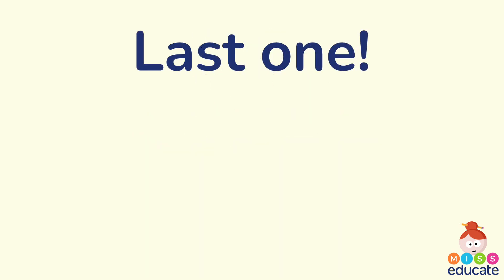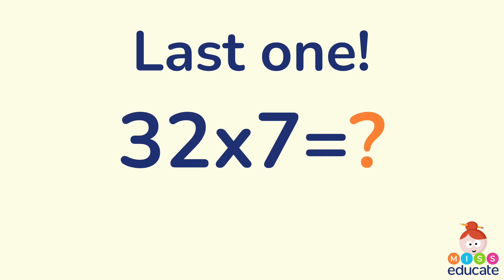Okay this is the last one and I'd like you to have a go at this one by yourself. 32 times 7. Where do your numbers go? Make sure you remember your columns. Which part do you multiply first? What happens when you create an extra ten? All of these things you need to try and remember as you have a go at doing this one by yourself. Pause the video and I will see you in a minute.